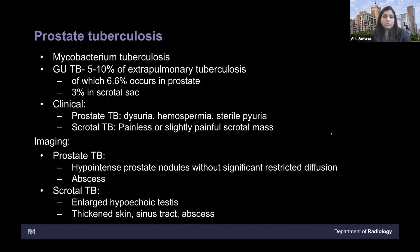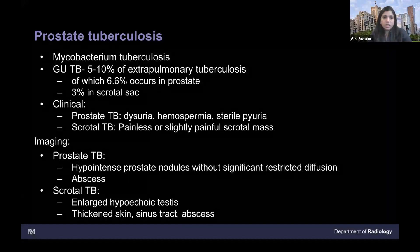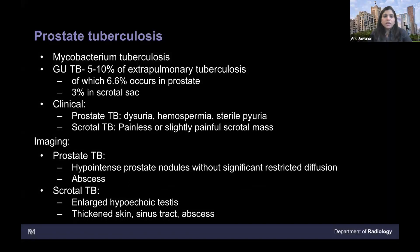Prostate tuberculosis — it's the same mycobacterium for GU TB. Extrapulmonary TB is seen in 5 to 10%; of those, prostate accounts for 6.6% and scrotal sac about 3%. Having knowledge about how it appears is important to not misdiagnose as malignancy. On imaging, they can present with hypointense prostate nodules — but they will not have significant restricted diffusion because it's a chronic granulomatous process. This gives a clue on MR prostate. They can also present as an abscess — a well-defined fluid-filled cavity with rim enhancement.